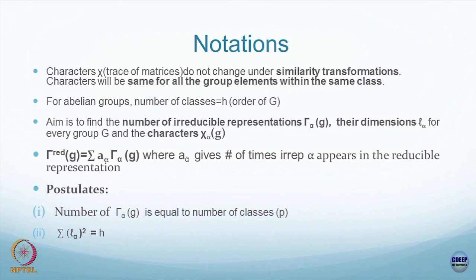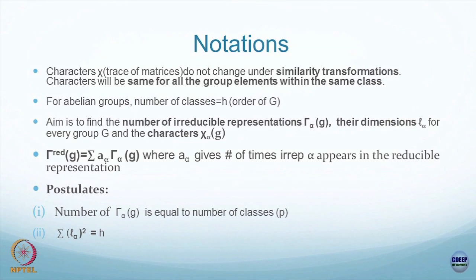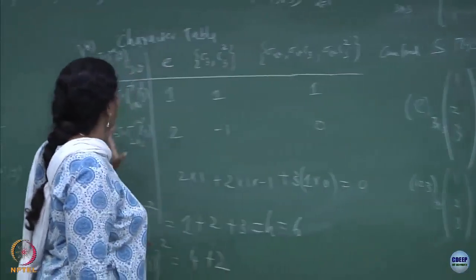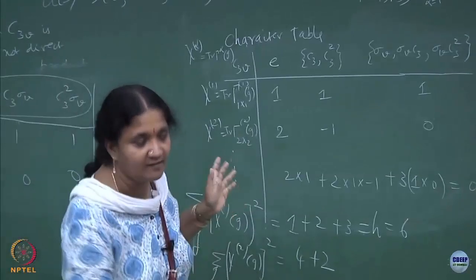Now I am going to postulate blindly — this can be proven, but I am not going to prove it in this course. Anyone interested can look at Hammermesh. Postulate: the number of irreducible representations is always equal to the number of classes. How many classes are here? It is 1, 2, and 3 — so I will find only 3 irreps for C3v.